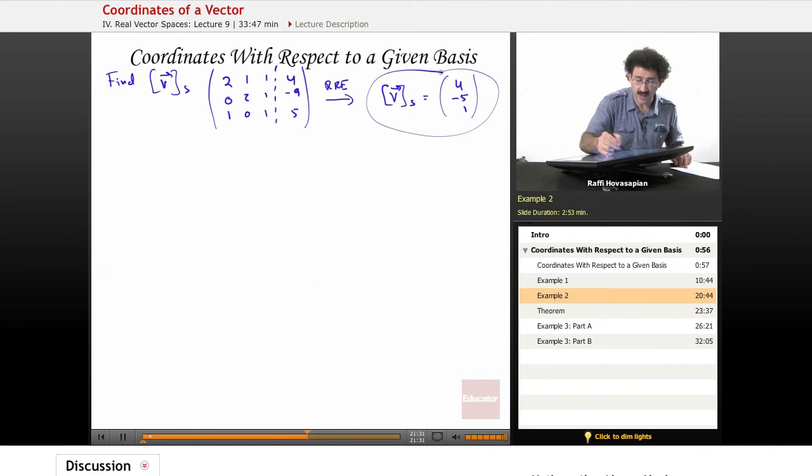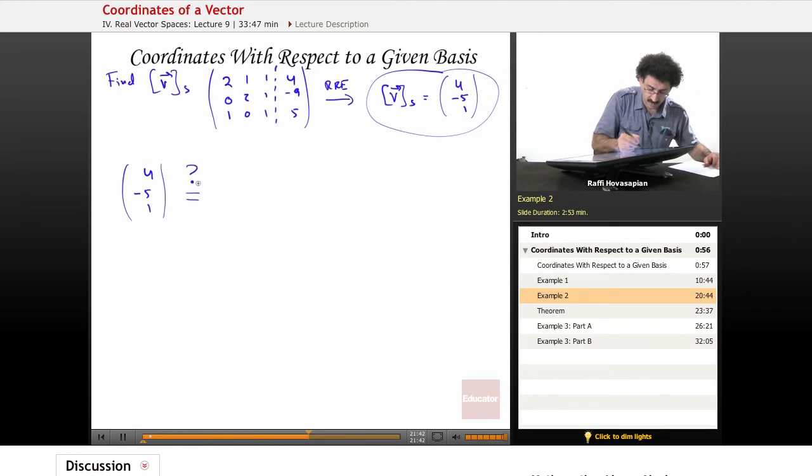So now we have the left-hand side. Now what we want to do is we want to check, is 4, negative 5, 1, does it equal that transition matrix?